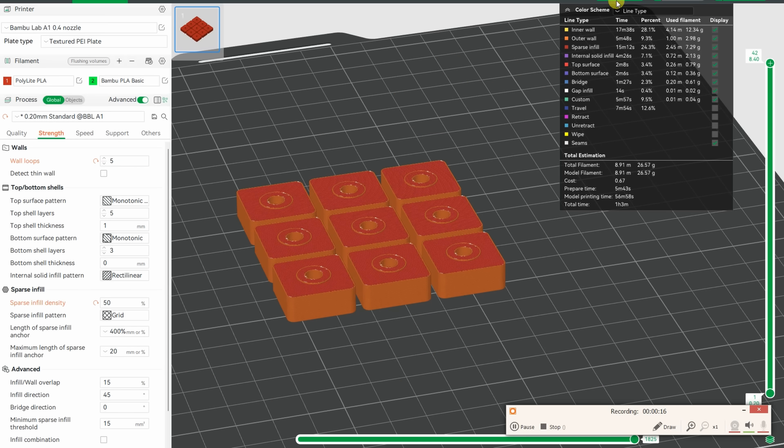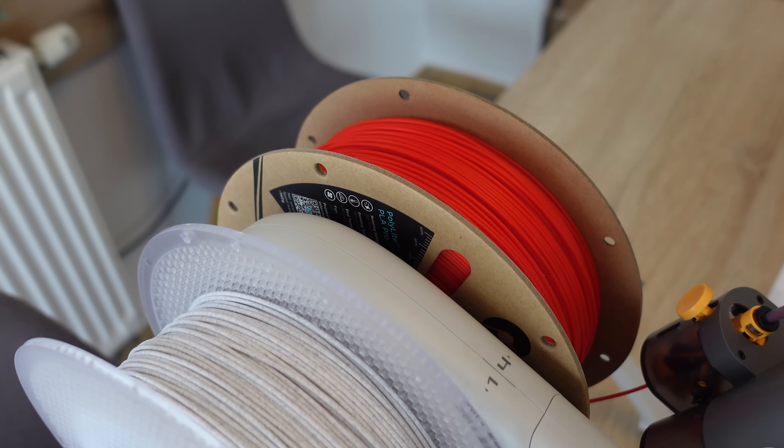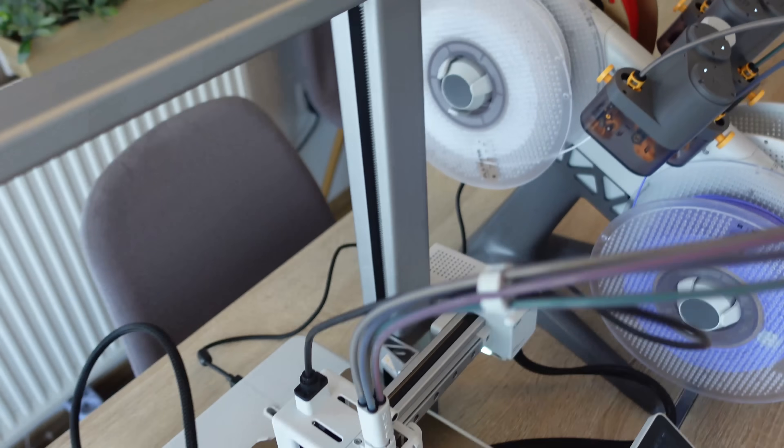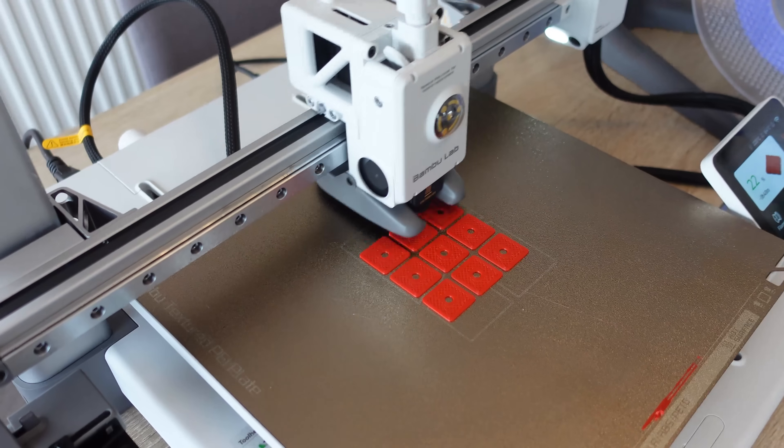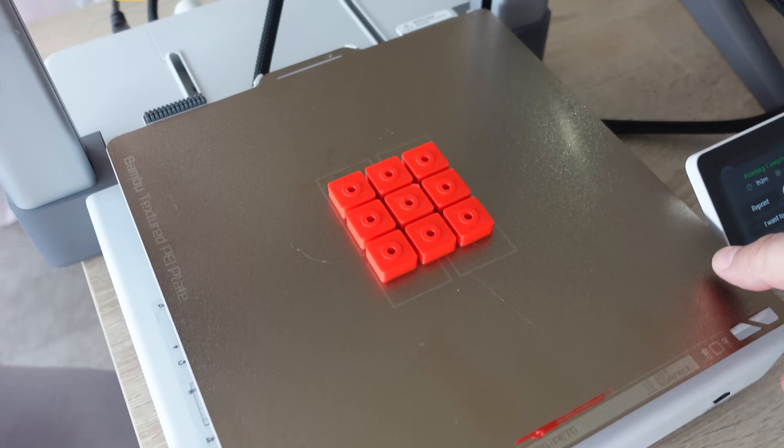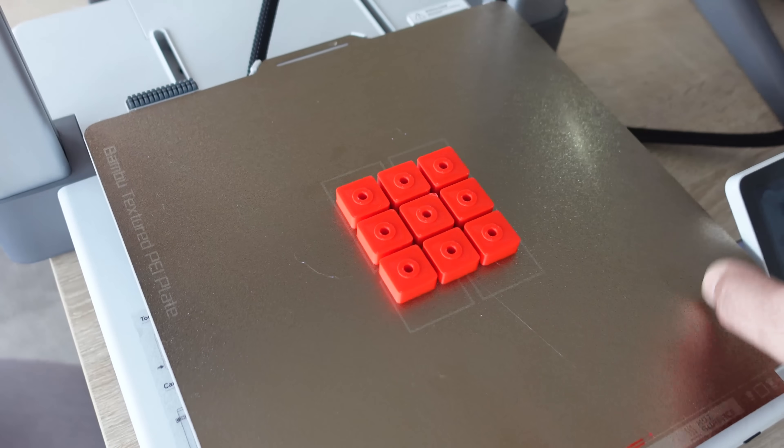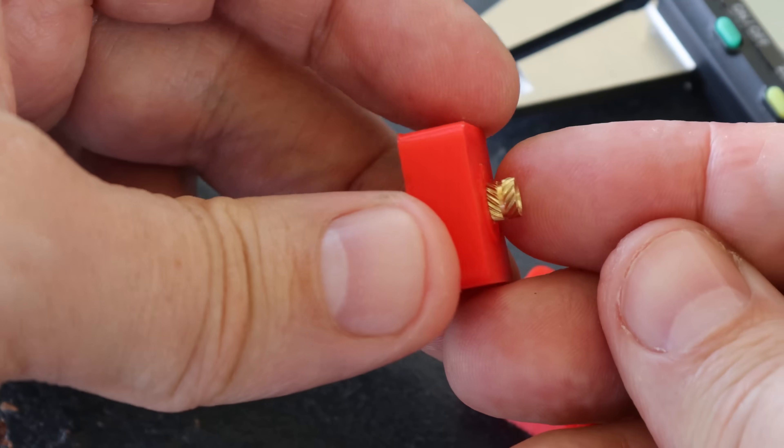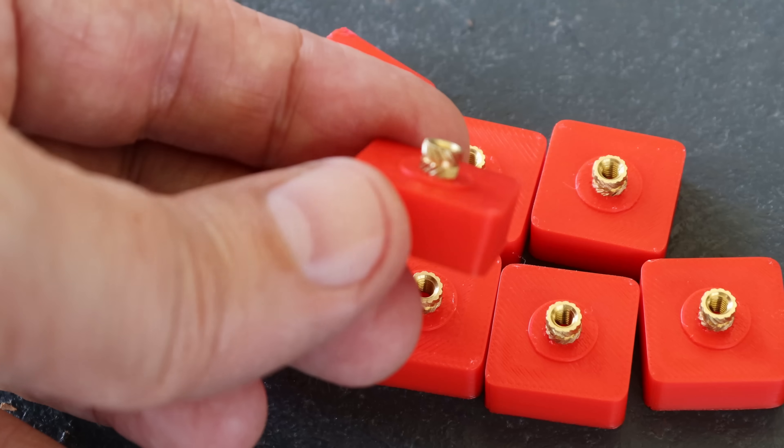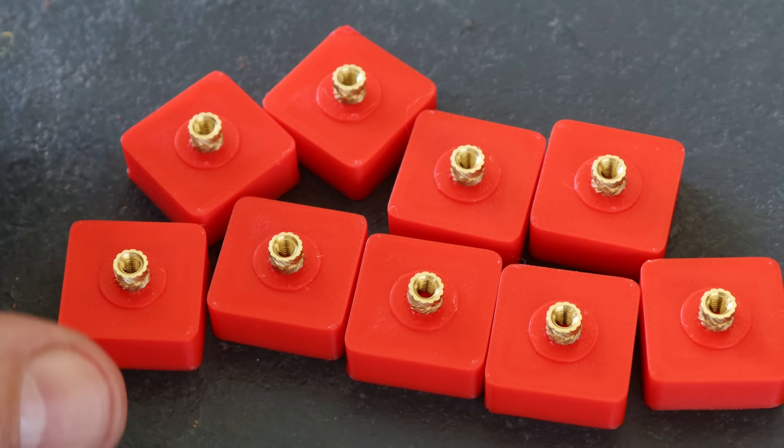And the bigger diameter is just for the aligning during the test. For these test objects, I'm using 5 walls and 50% infill. This is Polymaker PLA Pro in red color. And I will print everything on BambuLab A1 printer. The hole has the perfect size, because that cylindrical part tightly goes in. And I have prepared all 9 test objects.